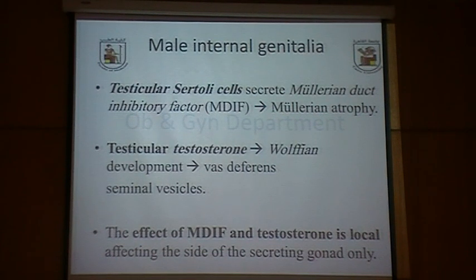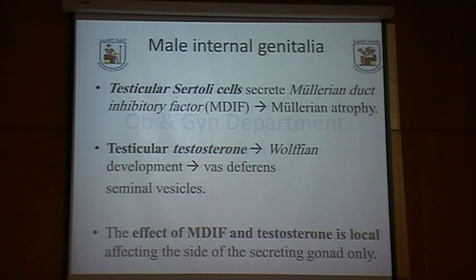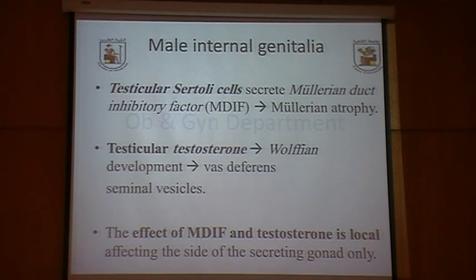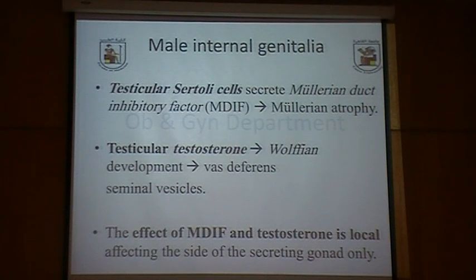In order for an individual to develop into a male, this is an active process requiring testosterone. The testicular Sertoli cells secrete anti-Müllerian hormone, or Müllerian duct inhibiting factor, which is very important for atrophy of the Müllerian duct — without it, the individual will develop a uterus. Testicular testosterone drives Wolffian duct development, resulting in vas deferens and seminal vesicle development. Notably, the effects of anti-Müllerian hormone and testosterone are local, affecting only the side of the secreting gonad.